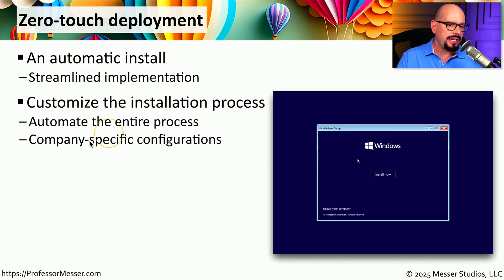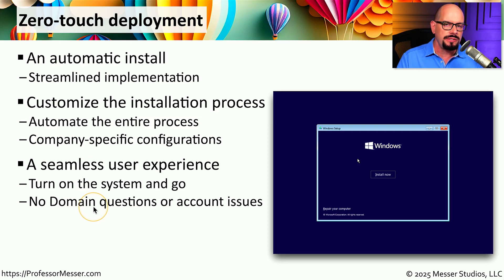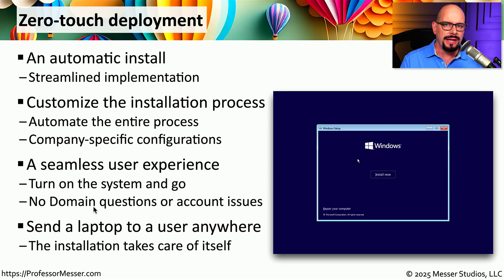A zero-touch deployment would also include configuration settings that are company-specific, such as email server settings. This means the user can open their new laptop, turn it on, and then wait for the installation process to complete. During that install, there will be an automated script that will configure the system, set up the domain connections, configure the email settings, and perform any other configurations necessary for your organization. Once you've built and optimized one of these zero-touch deployments, you can re-image a laptop, ship it anywhere in the world to any user in your organization, and they'll be able to turn it on and immediately be productive.